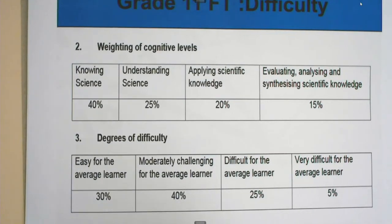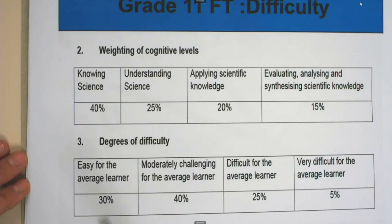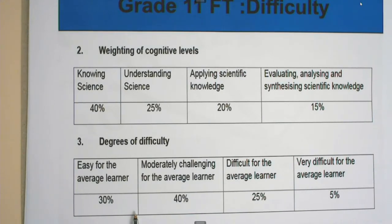When we set papers, we use cognitive level weighting and degrees of difficulty. It is easy for the average learner — 30% of the work — so you will be able to pass this. The more you put in, the better it becomes. Life Sciences is like a language: you have to practice it, speak it, write it, and think it. That is how you get to know it, especially when it comes to terminology and definitions.